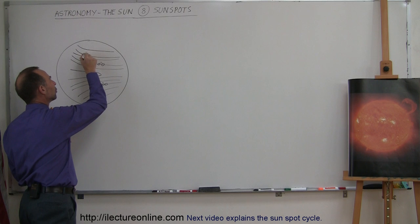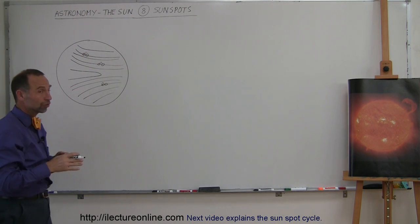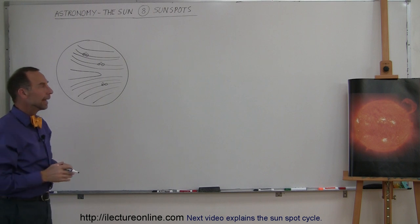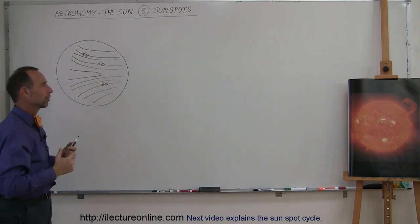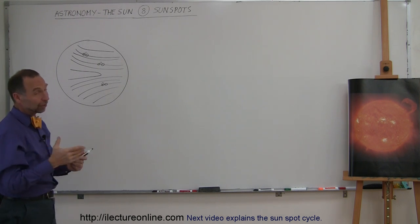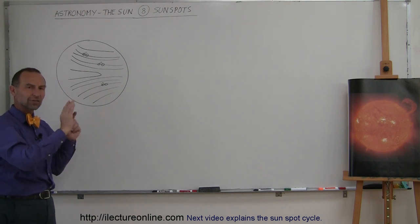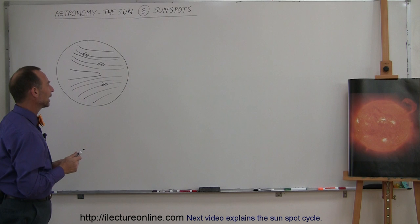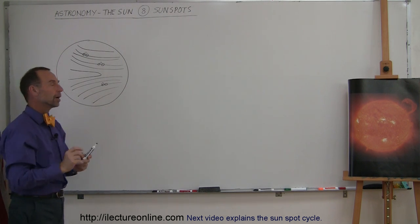Sunspots occur in cycles. There are certain times where there's virtually no sunspots, and times where you may have over a hundred sunspots across the surface. They also appear at different latitudes during those cycles. By the way, those cycles are about 11 years long, and we'll have another video on the cycle. What we want to understand here is what causes sunspots and what they really are.